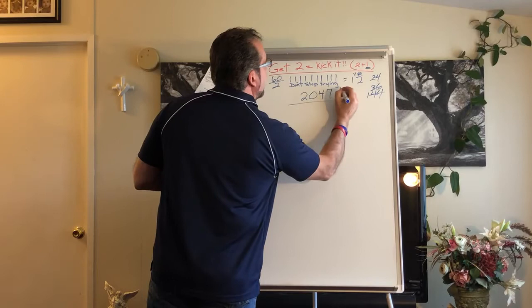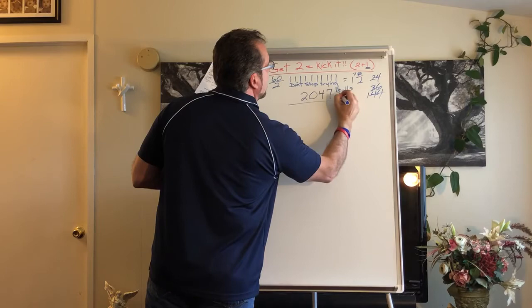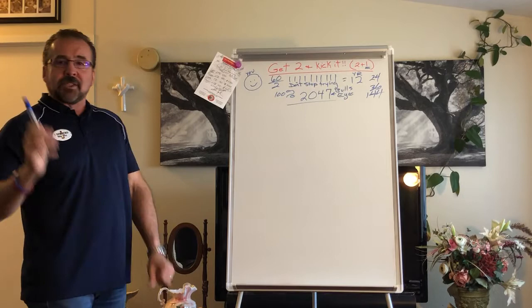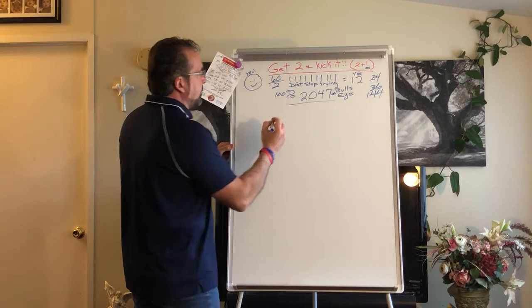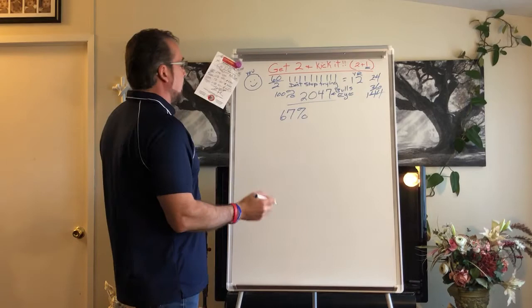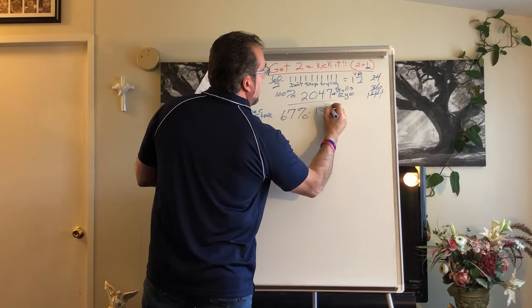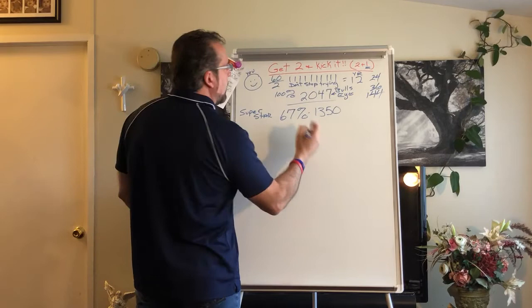Right here we're going to call that the bullseye, because 2047 would be 100 percent. But we're just going to assume that life is not 100 percent, and we're going to show you some other numbers that work. We're going to start out with 67 percent, and that's going to make you a superstar. And that's going to give you 1350 people - it's actually a little more than that, but 1350 people in your organization.